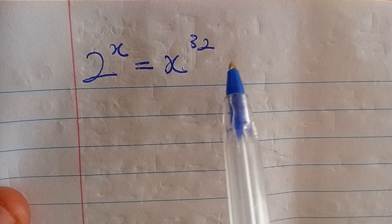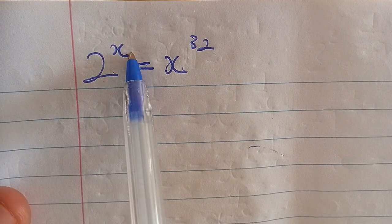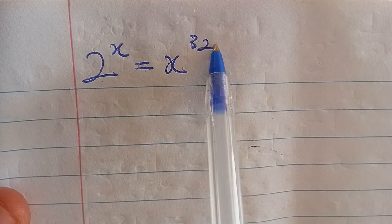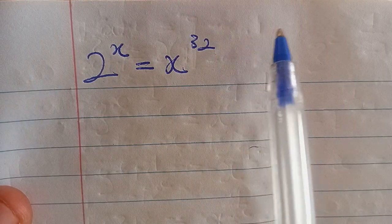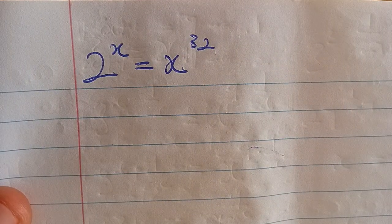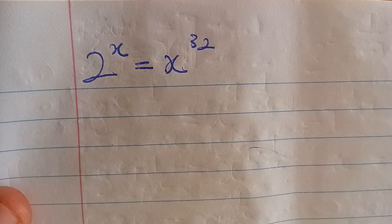Welcome back to the class. So this is 2 exponent x equal to x exponent 32. We are going to manipulate the equation until we are able to get our final answer.